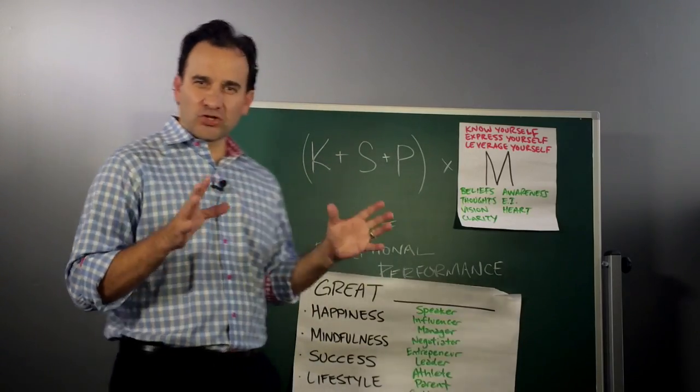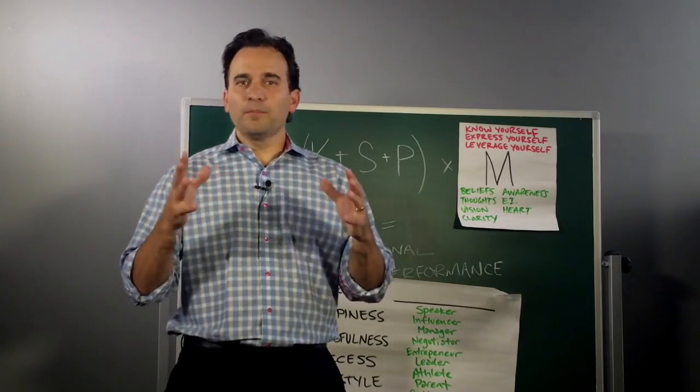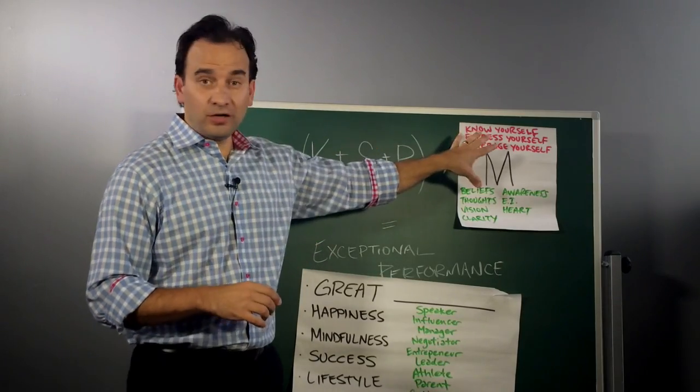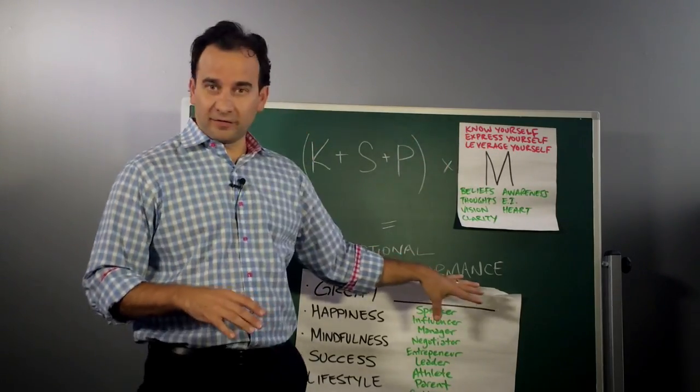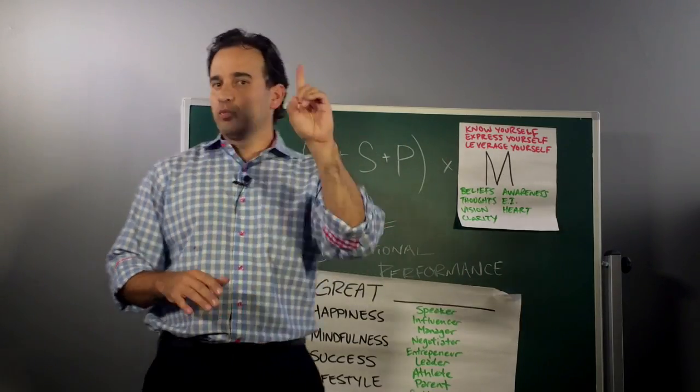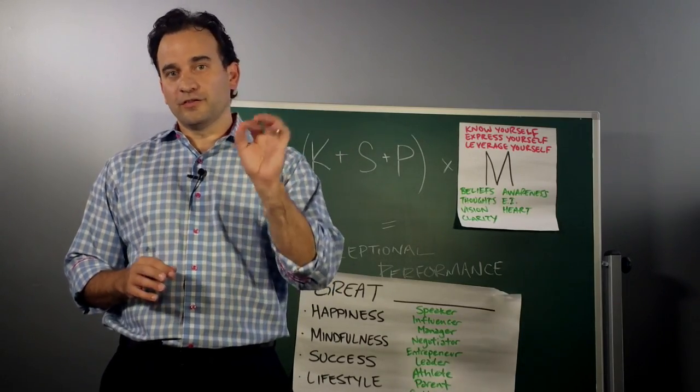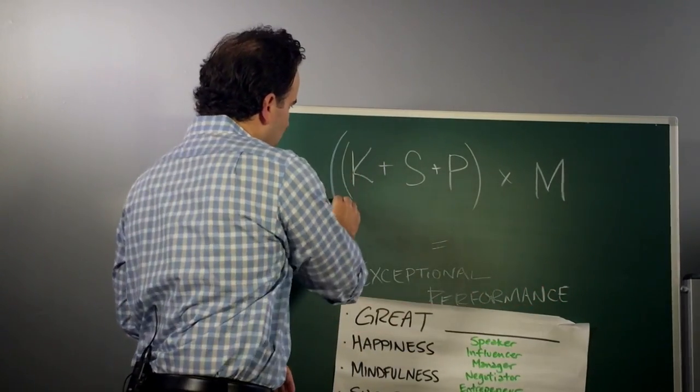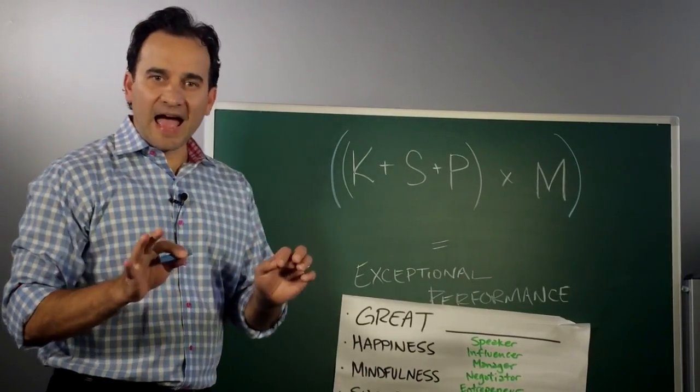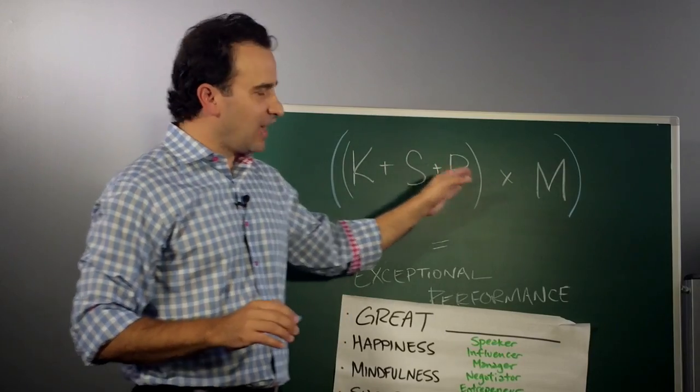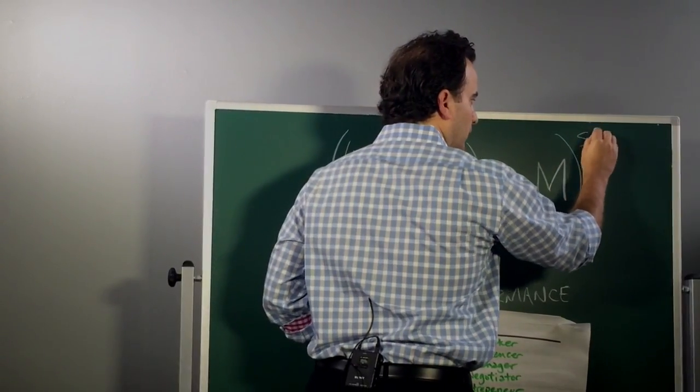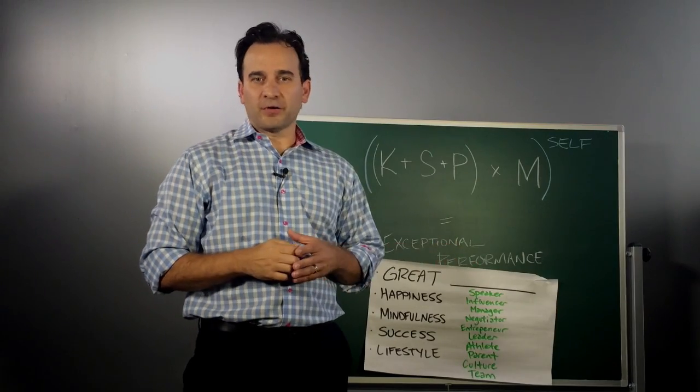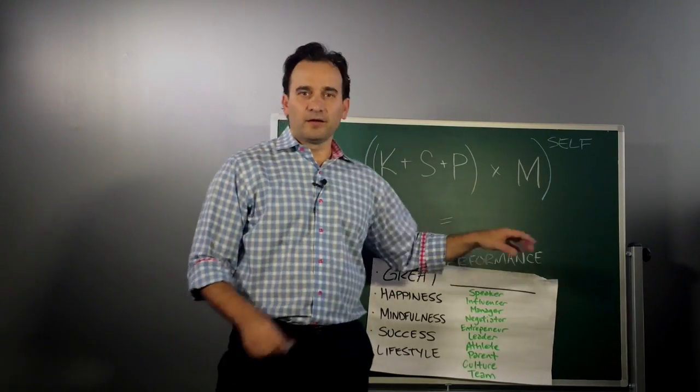And it struck me that maybe there's another dimension to this equation. Your ability to bring all this together, your ability to maximize your effectiveness in executing this equation, so that you can create all of this. And that between this and this is one important X factor. And that X factor is you. And so I'm going to modify this equation just slightly. I'm going to take the original, but I'm going to make it so now knowledge plus skills plus process times mindset to the power of you, to the power of self equals full expression, being the best you can be, creating exactly what it is that you want.